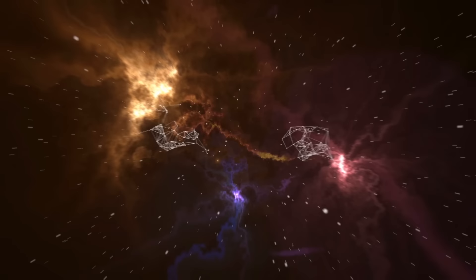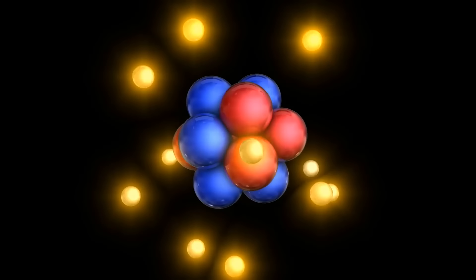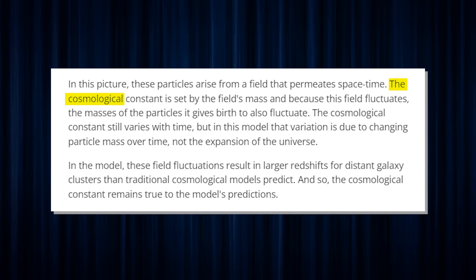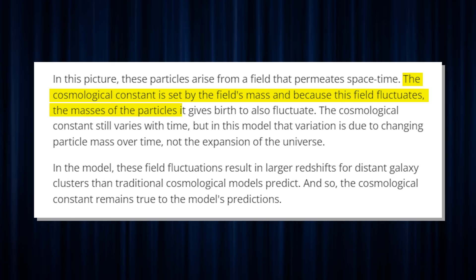The effects we observe that point to expansion are instead explained by the evolution of the masses of particles, such as protons and electrons, over time. In this picture, these particles arise from a field that permeates space-time. The cosmological constant is set by the field's mass, and because this field fluctuates, the masses of the particles it gives birth to also fluctuate.